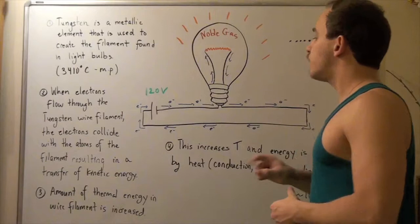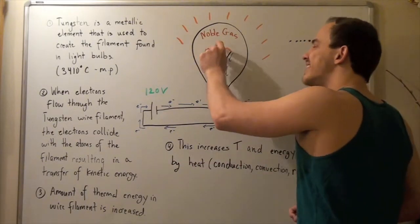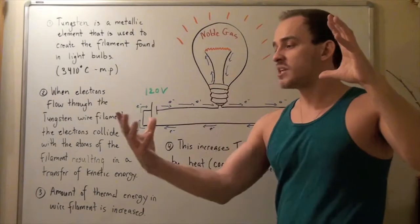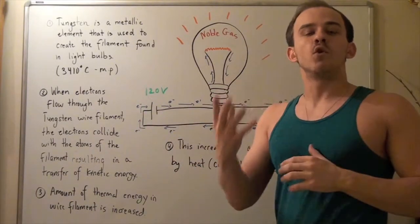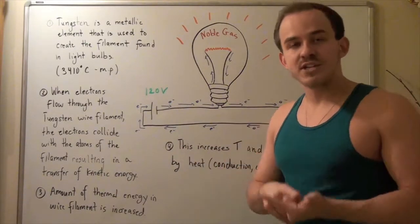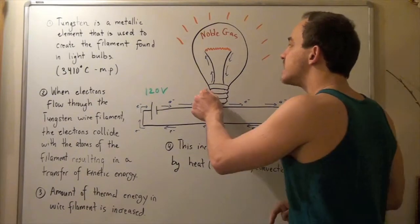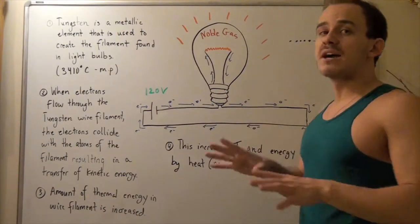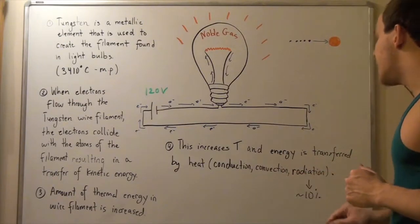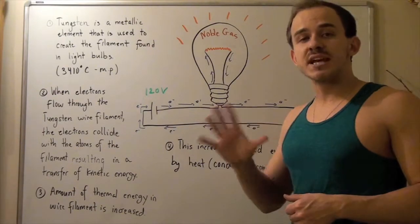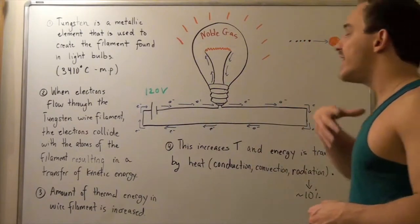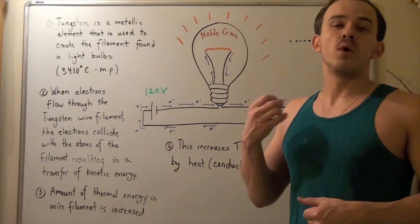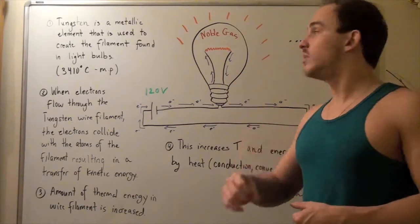As temperature increases in this filament, we know that whenever there's a higher temperature somewhere and a lower temperature somewhere else, there is a transfer of energy in the form of heat — conduction, convection, or radiation. Assuming this light bulb is not physically touching any other material, conduction will not occur, so we're only worrying about convection and radiation. About 10% of energy transfer occurs as radiation — energy transferred in the form of electromagnetic waves, such as light — and this is exactly what causes our light bulb to glow.